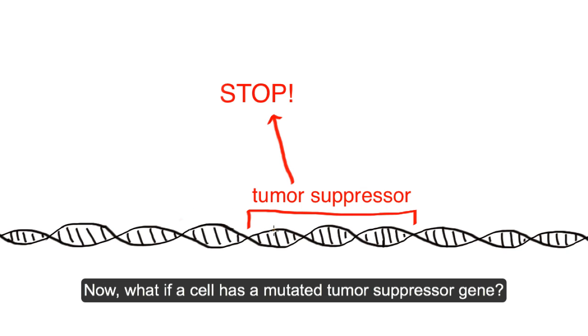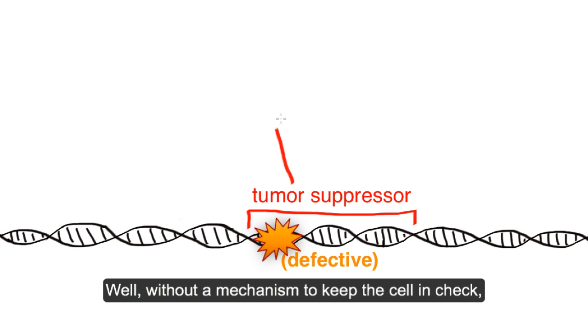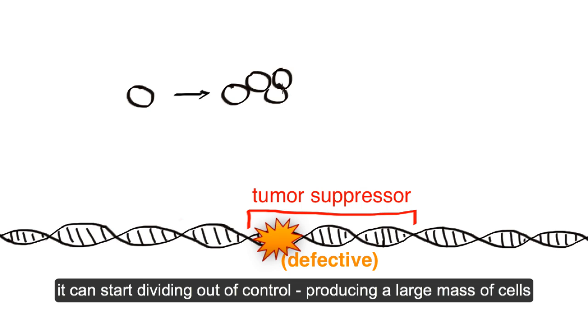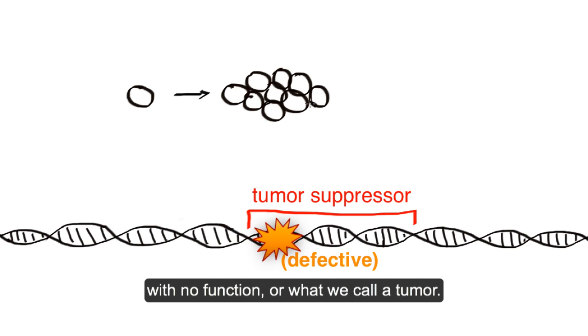Now, what if a cell has a mutated tumor suppressor gene? Well, without a mechanism to keep the cell in check, it can start dividing out of control, producing a large mass of cells with no function, or what we call a tumor.